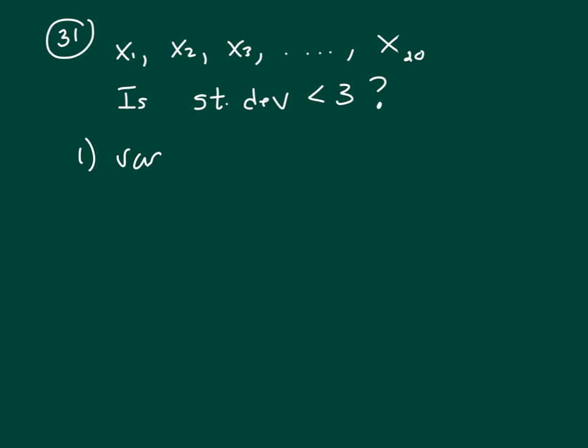Well, the variance equals 4, and the way you find the standard deviation, you take the square root of the variance. So that would be the square root of 4, which is 2, and that's less than 3, so we answered the question. All right, so clue 1 works.